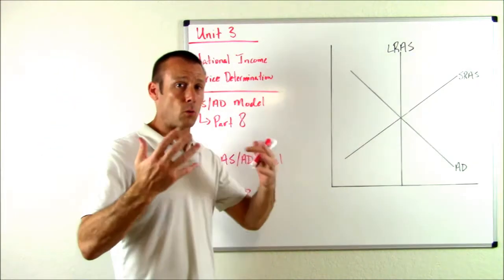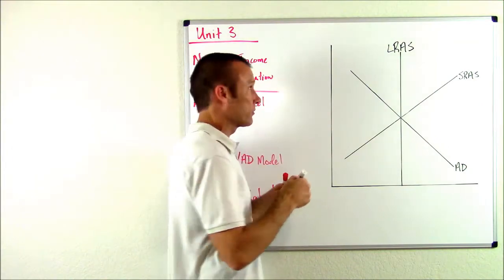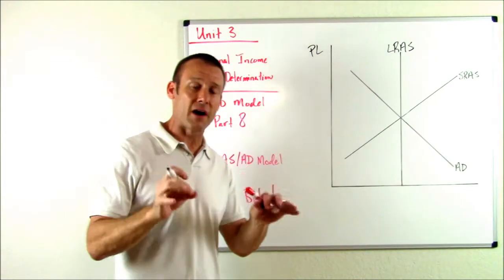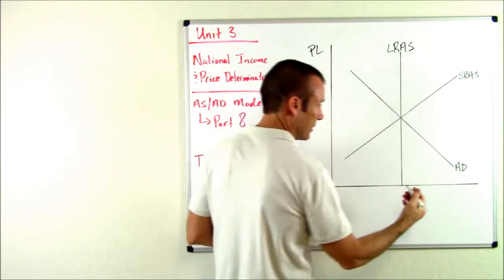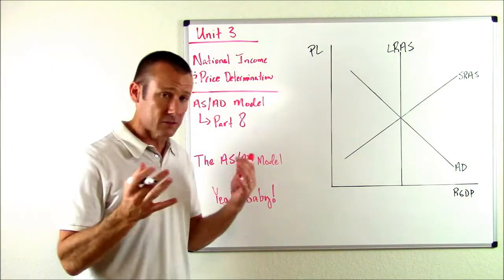What we should understand at this time for sure is that the vertical axis, what we're measuring vertically, is the price level - the weighted average of all prices of all final goods and services. This axis over here, what you'll see a lot of times, is real GDP, and that's perfectly fine.